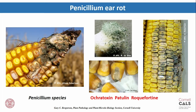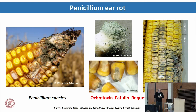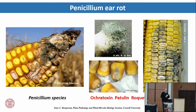We see some Penicillium ear rot — this bluish-greenish mold — and it develops in some of our silage as well. There's a long list of secondary metabolites produced, including well-known ones like ochratoxin and patulin, plus things like roquefortine and many minor toxins. We're seeing more of it in our corn silage, yet we don't really know what it's doing to animal performance.